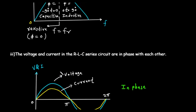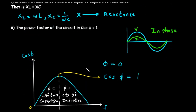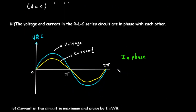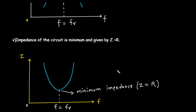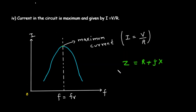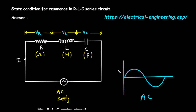To summarize, resonance in a series RLC circuit is a special state that occurs at a single specific frequency. At this resonant frequency, the opposing effects of the inductor and capacitor cancel each other out. The circuit behaves like a pure resistor with a perfect power factor of 1. The voltage and current are perfectly in phase. The total impedance is at its minimum, and because of that, the current flowing through the circuit is at its maximum. These five interconnected conditions define the state of resonance — a powerful principle used in everything from radio tuners to filters and oscillators.